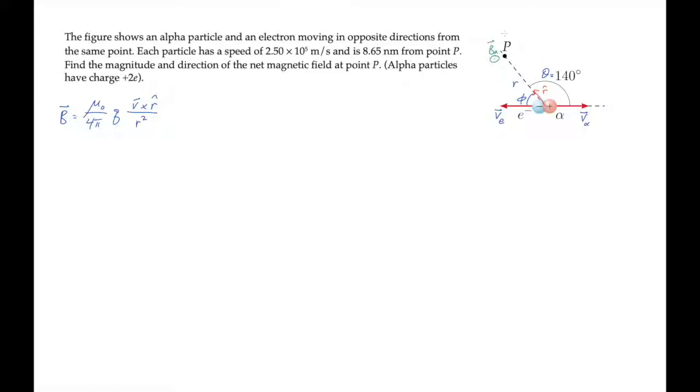For the electron, the vector v sub e cross r hat is directed into the screen. Its negative charge means that the magnetic field will be opposite this, also directed out of the screen. So both fields are directed out of the screen.